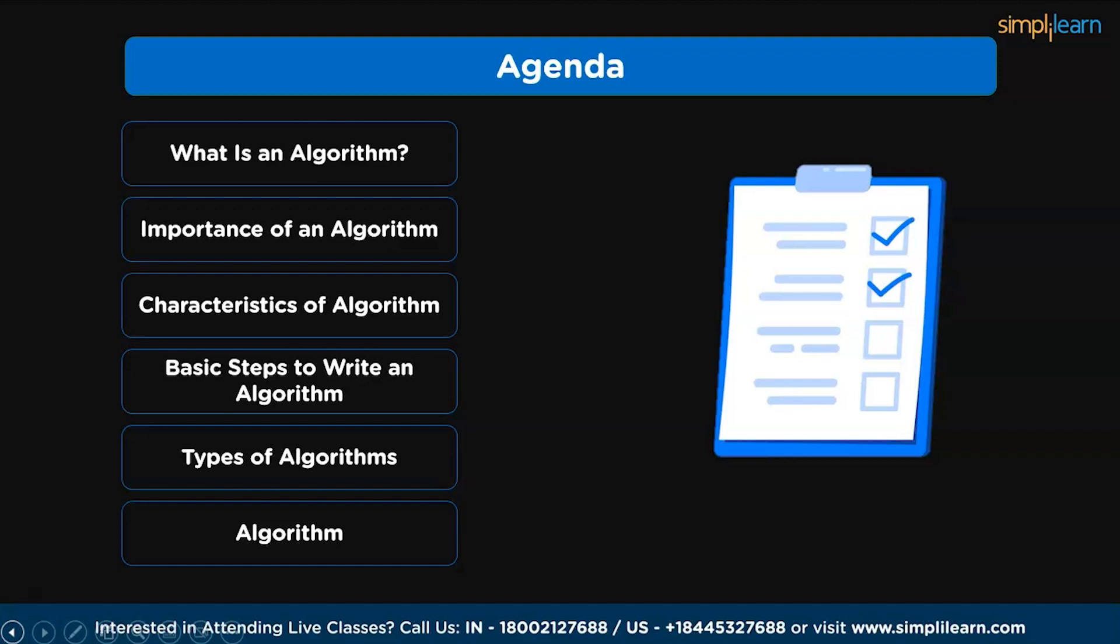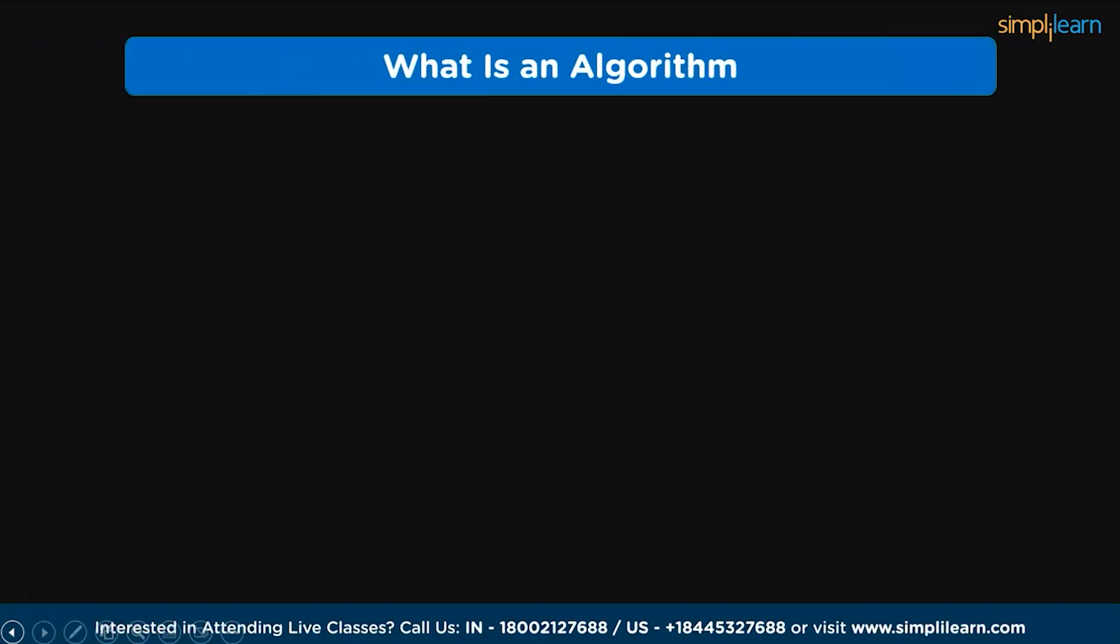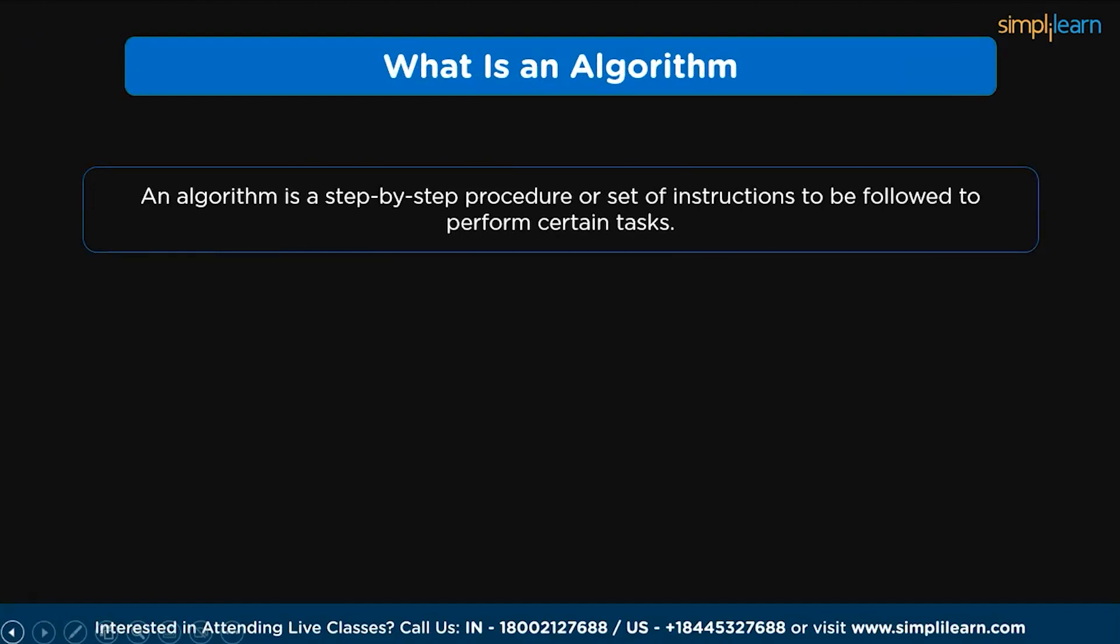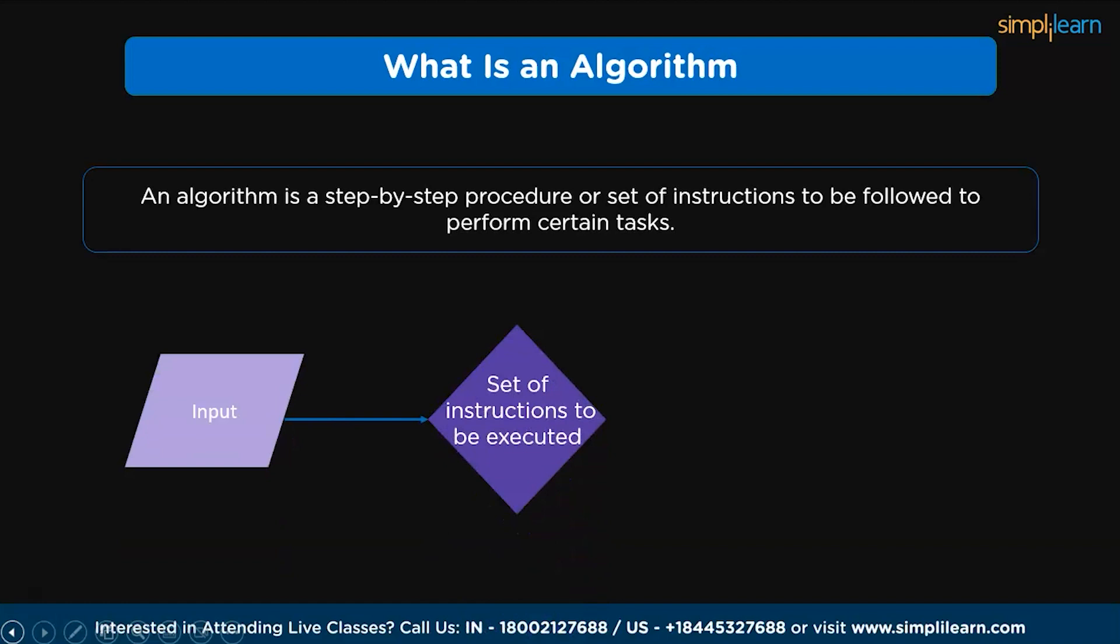Let us get started with what is an algorithm. The algorithm is a step-by-step procedure or set of instructions to be followed to perform certain tasks. For example, algorithm takes input and performs certain operations, and finally, produce a result.